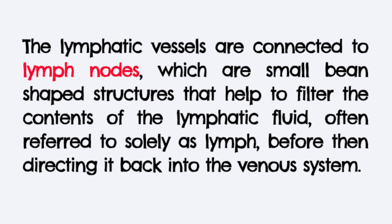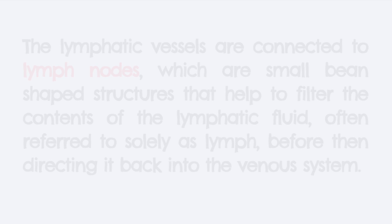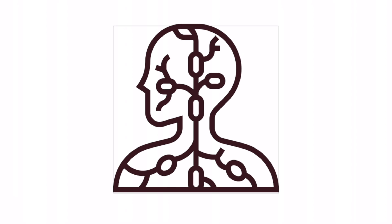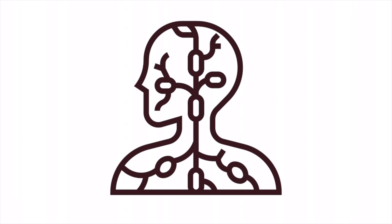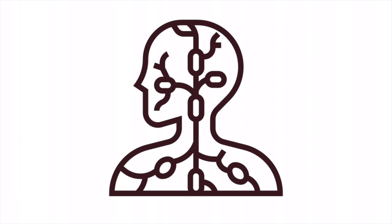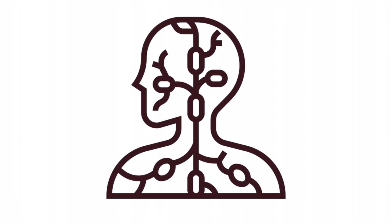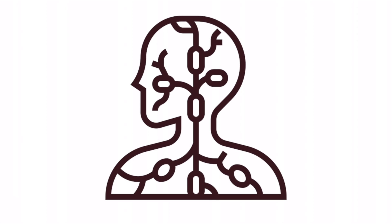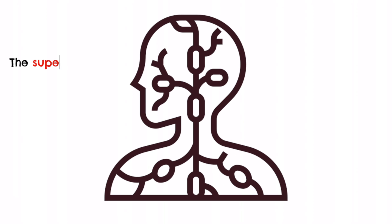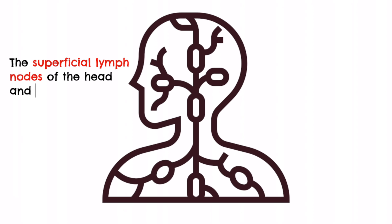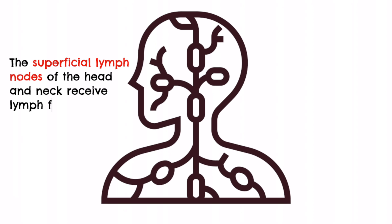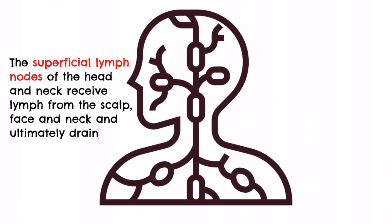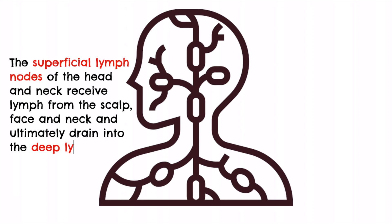Let's now take a closer look at some of the lymph nodes of the head and neck. We can divide these nodes into two distinct groups: a ring of superficial lymph nodes and a group of deep cervical lymph nodes. We'll start with the superficial lymph nodes first. The superficial lymph nodes of the head and neck receive lymph from the scalp, face and neck and ultimately drain into the deep lymph nodes.